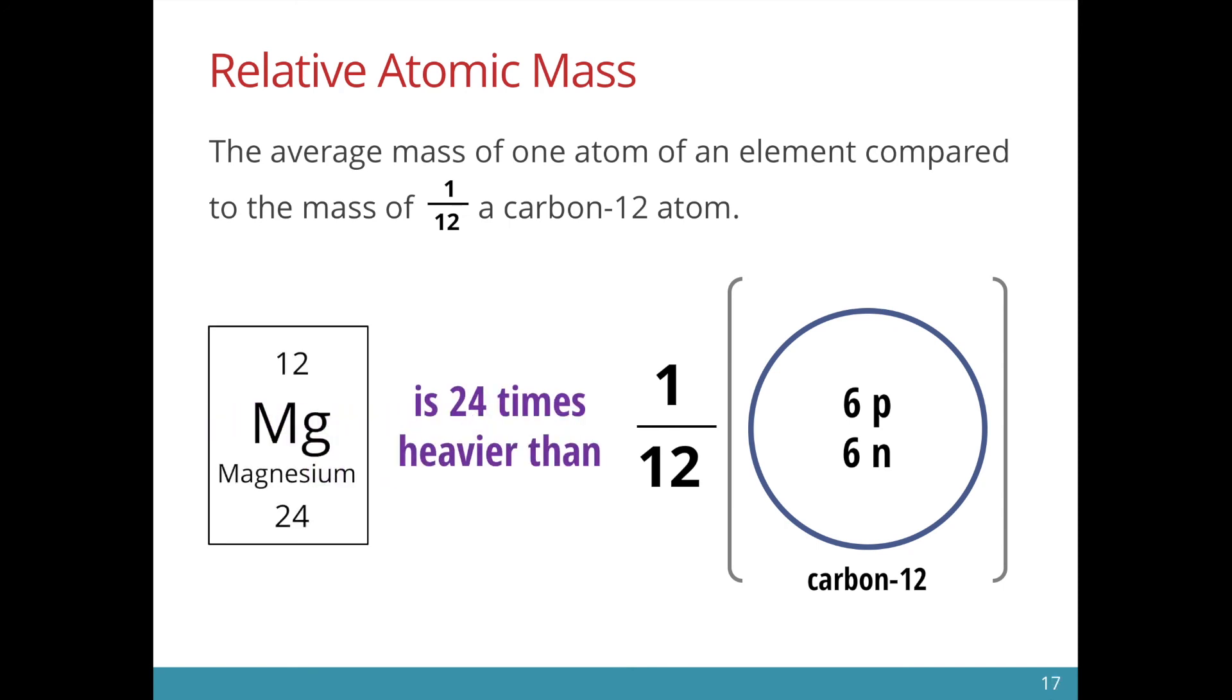If you look at the periodic table taking magnesium for example, we see that the relative atomic mass is 24. This means that it is 24 times heavier than one twelfth of a carbon-12 atom. So every element you see in the periodic table would have this number at the bottom, the bigger number that is the relative atomic mass. This will tell you how many times heavier this element is compared to one twelfth of a carbon-12 atom.